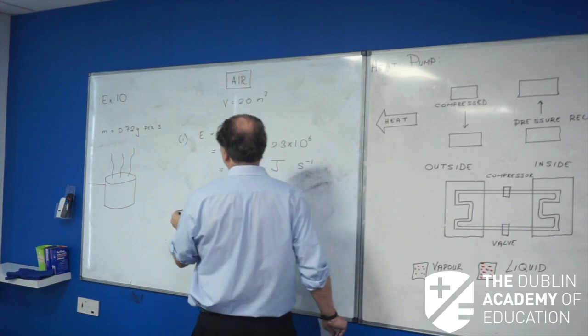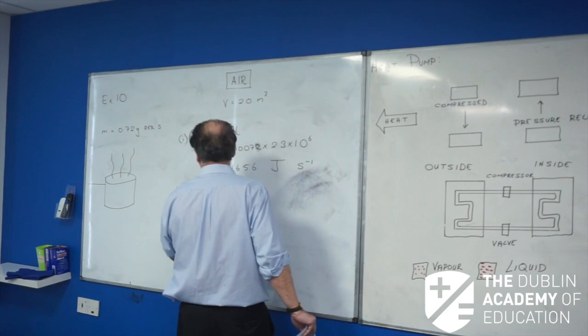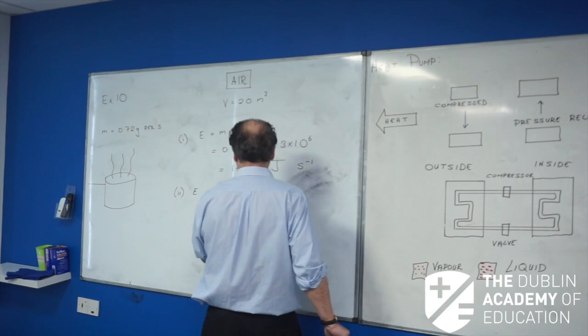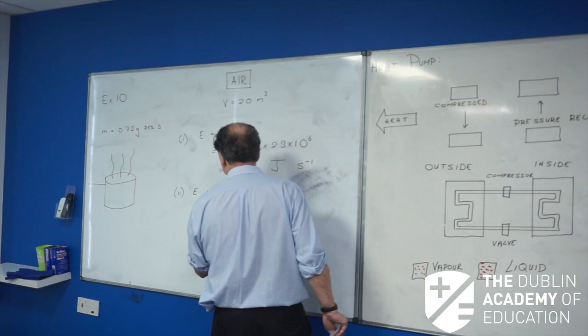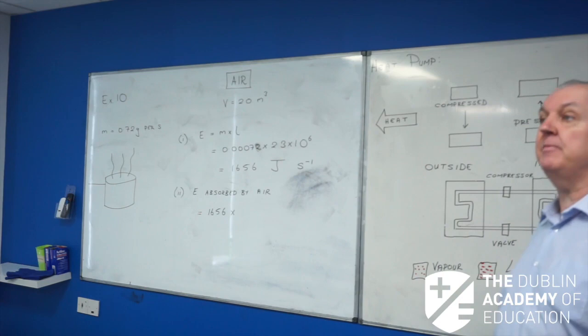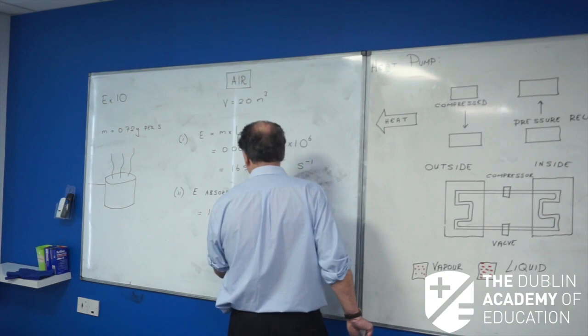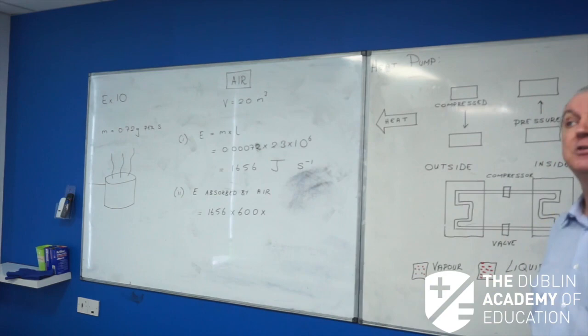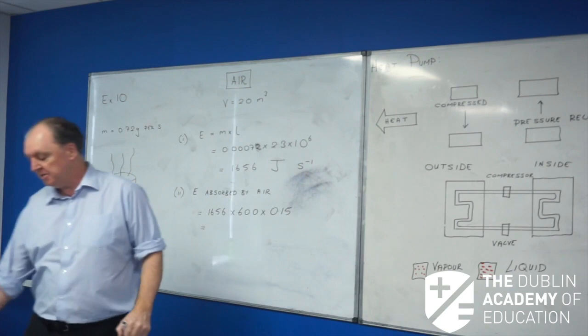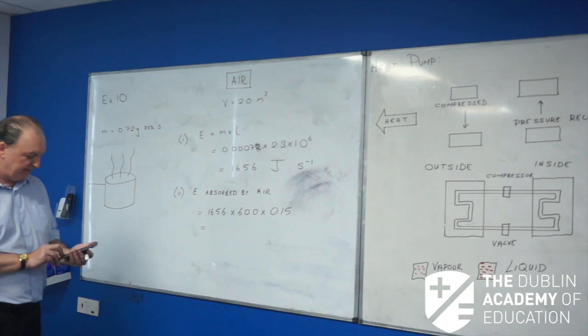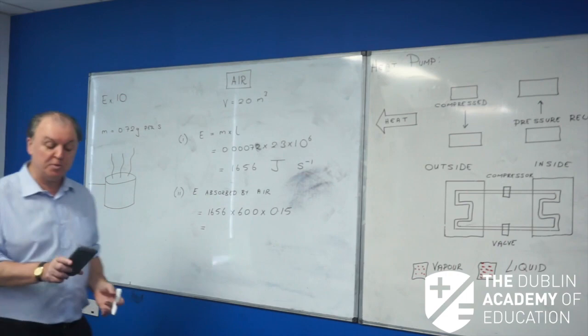So here is, in part two, the energy absorbed by the air. It's the energy per second, which is 1,656. That's going on for 10 minutes, 60 seconds in a minute, 10 by 60, 600 seconds. And I'm only talking about 15% of it being transferred to the air. So 15 over 100, 0.15. That's the total energy that's absorbed by the air in the kitchen. So 1656 by 600 by 0.15, and I get 149,040 joules.